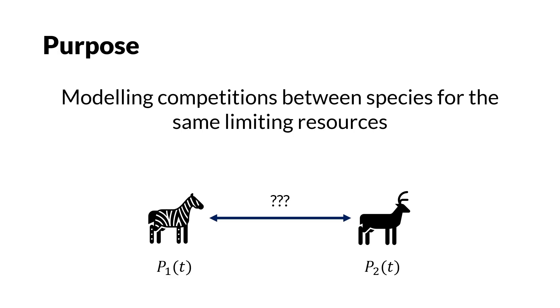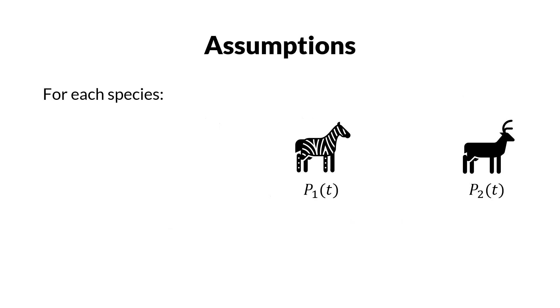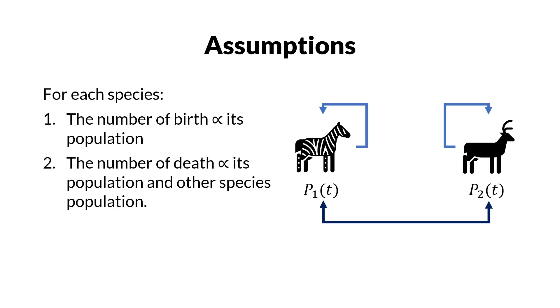We want to describe the assumptions into equations which we could solve and then simulate them to answer our questions. The first assumption is the same as the unconstrained population model: the number of births is proportional to the number of populations. The competition factor is added in the second assumption, that is the number of deaths in each species are proportional to each population and other species population.